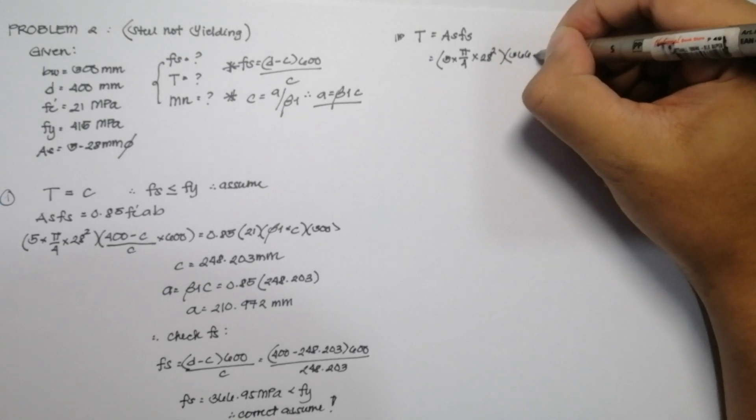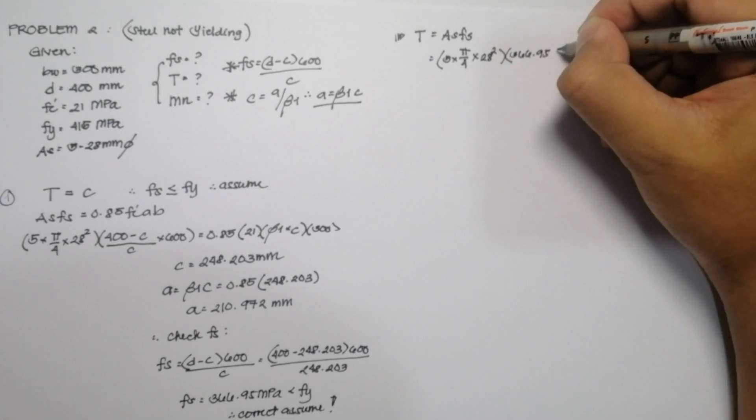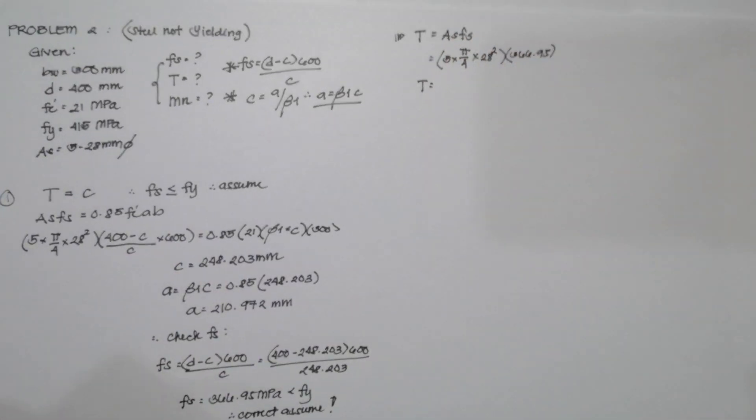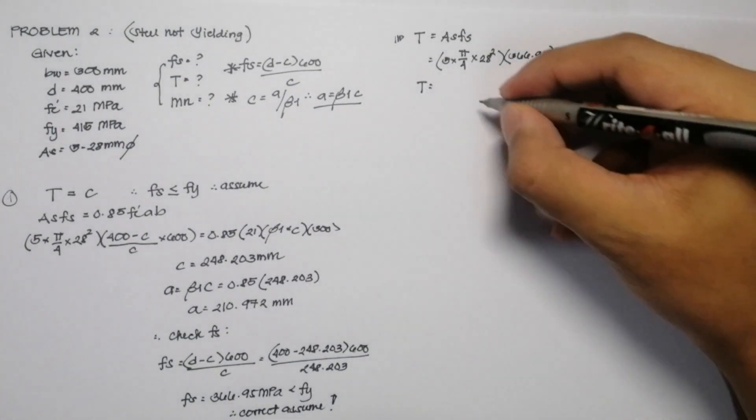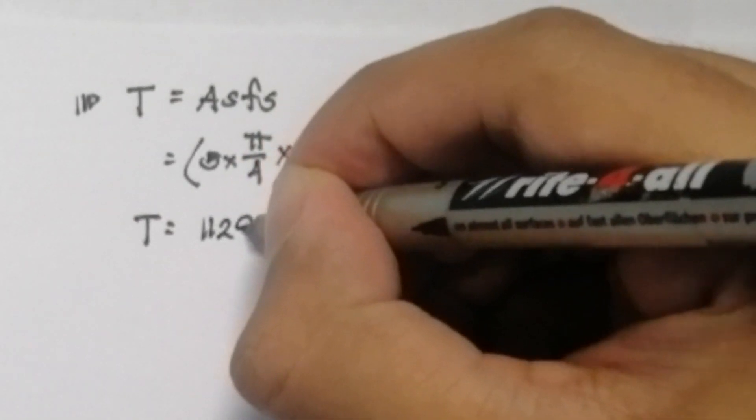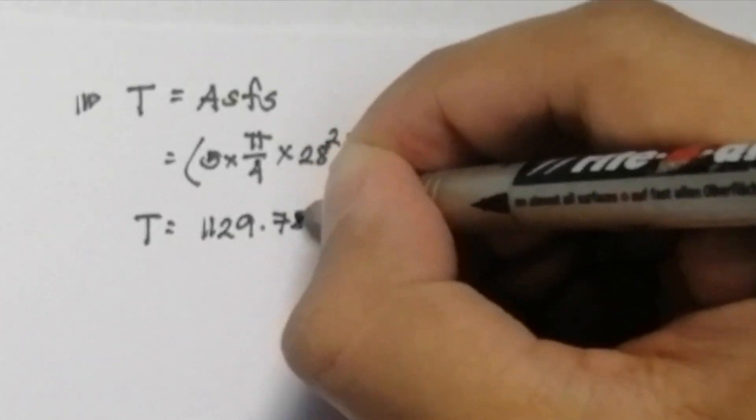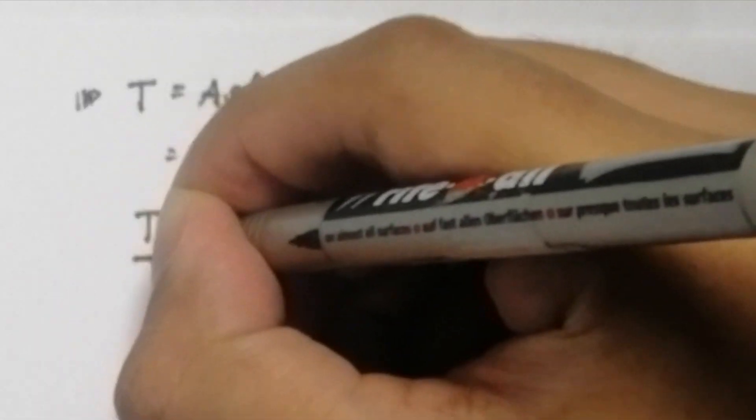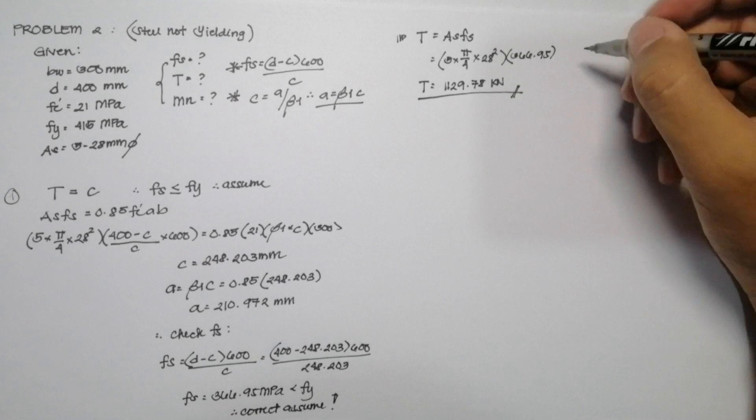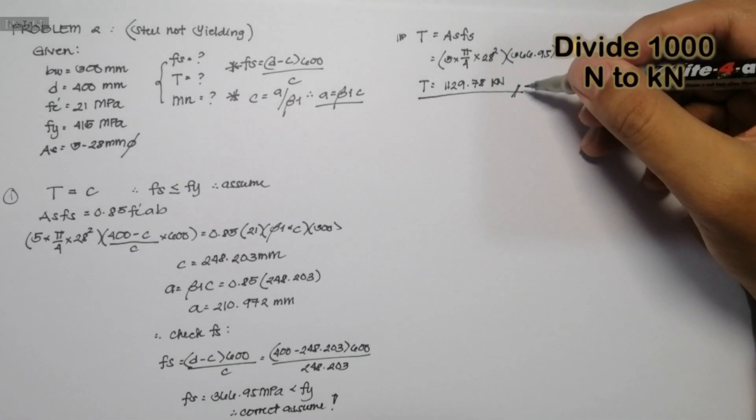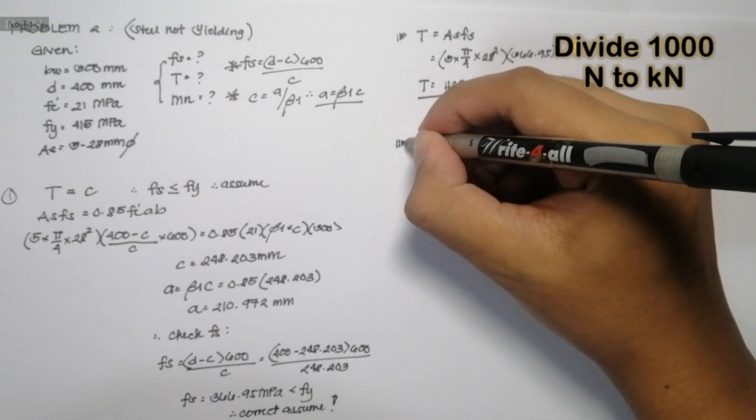So the value of T is equal to 1,129.78 kilonewtons. And that is the answer for the second question. Remember that you should divide it by 1,000 so that you can convert newton into kilonewton.